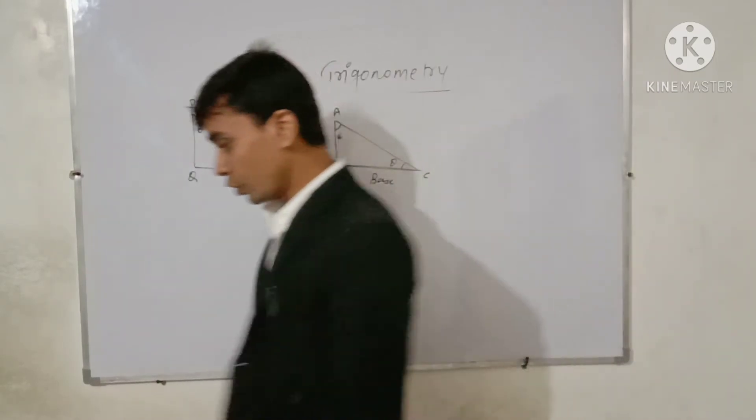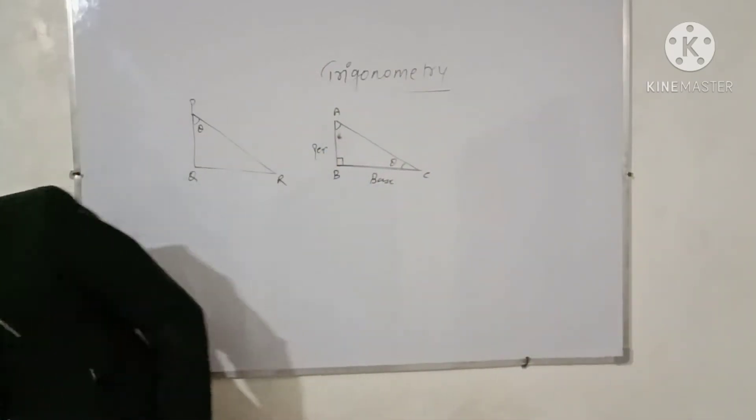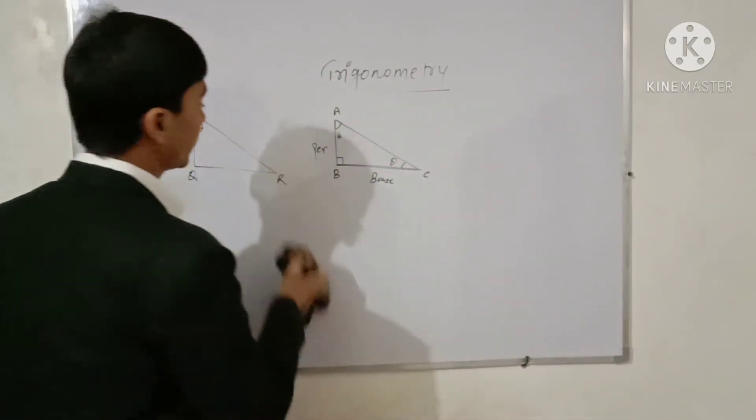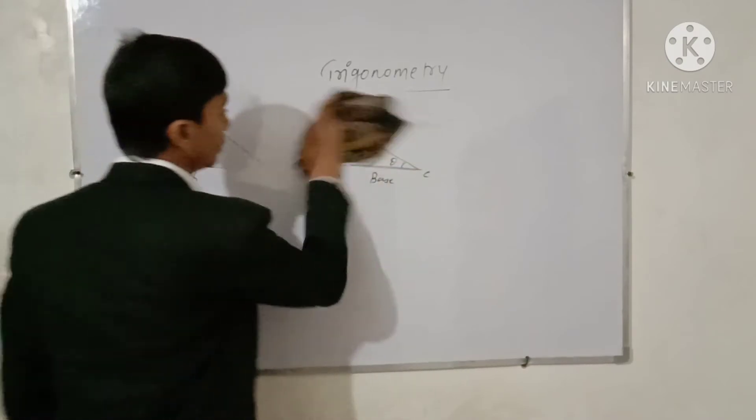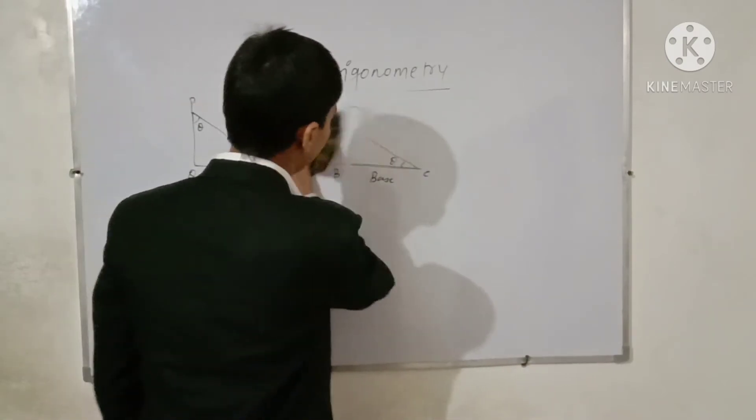For example, if we are considering angle C, then the perpendicular will be AB and the base will be BC. So the simple logic is: the side adjacent to the angle is the base, and the side opposite to theta is the perpendicular. Let us now discuss some questions to clarify what is perpendicular and what is the base.